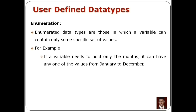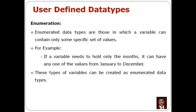For example, there is a variable and that variable needs to hold only the months. The values range from January to December, so there are 12 months. In those 12 months, we can store a specific set of values in a variable. That is called an enumerated variable, so we can use the enumerated data type.